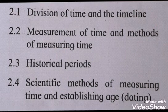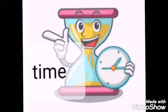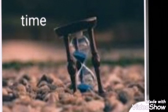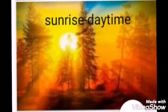We will see the first point: division of time and the timeline. There are different methods of reckoning time. Time is continuous — it does not stop and it doesn't have an end — but for our convenience we divide it into periods. The method we use for reckoning time depends on our purpose for dividing it.